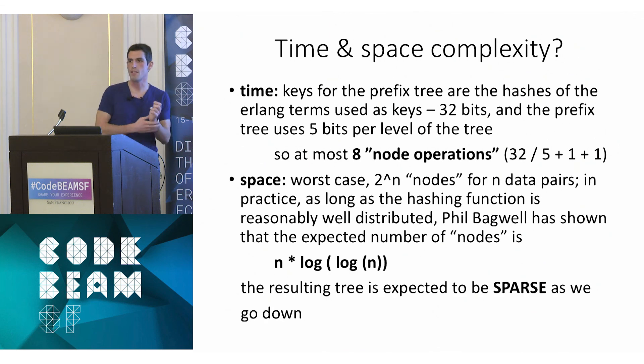As far as space goes, it's a little more involved because, yeah, if your tree is really not nice, you can end up with a lot of nodes, 2 to the n, for n data pairs. But if your hashing function is reasonable, meaning that it actually distributes values pretty evenly over the space image, then Phil Bagwell has shown in his paper that you can expect to have a number of nodes that's really close to n. It's n times log log n. Because the idea that the resulting tree, the first nodes, yeah, they're going to have a lot of subtrees. But as you go down, it's going to get really sparse really fast. So that's pretty good.